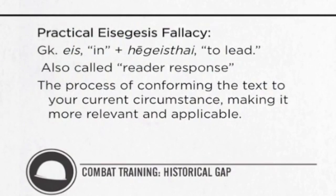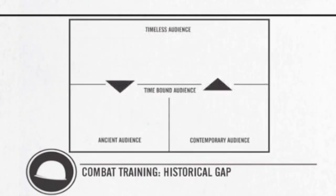Got to know those types of things — very important. Enhances the text. Combat training: the practical eisegesis fallacy, sometimes called reader response — what does it mean to you? The process of conforming the text to your current circumstances, making it more relevant and applicable. This skips the historical and goes in complete reverse. What does purple mean to you? Then that's what it means in the text. What do I need to hear from this text? What are the troubles I'm going through? If you practice this methodology, I promise you — by taking things out of context, you can find anything. The Bible will say exactly what you want it to say because you're conforming it to yourself.